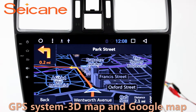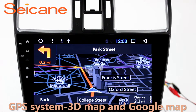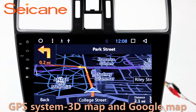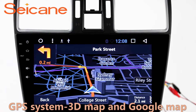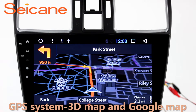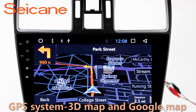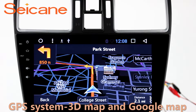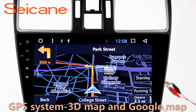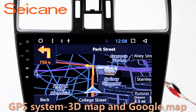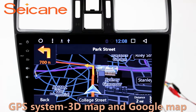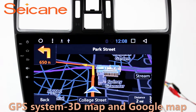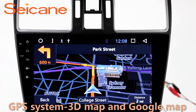GPS. Go to the main menu and open the GPS system. The 3D navigation map shows you accurate GPS locations and route information. It also supports Google Maps. You will never get lost with this function.